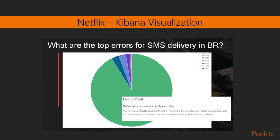They then found out that in certain parts of Brazil, a ninth digit prefix had been added to mobile numbers, and the users were not used to it yet. The SMS provider in Brazil expected the ninth digit prefix, but since it wasn't being provided, users faced issues validating their Netflix account with phone number. This could not have been discovered if Netflix hadn't implemented Elastic Stack — it helped them easily pinpoint and fix the issue.